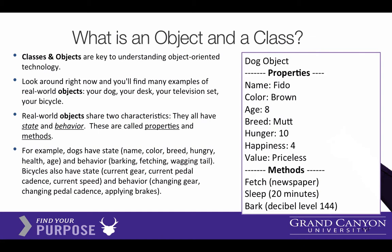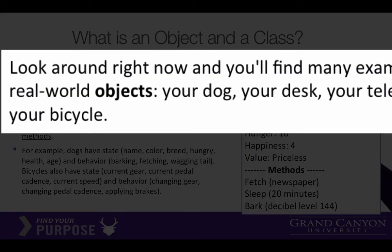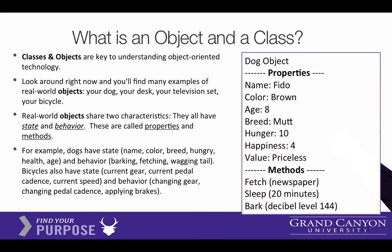If you look around you, you can see everything in your surroundings that you would say is like a noun can be modeled in a computer program as an object. For instance, your dog, or your desk, or your TV, or your bicycle, or a user, or a shopping cart, or a product, or a video game character. Everything that you see that can be named as a noun is an object.